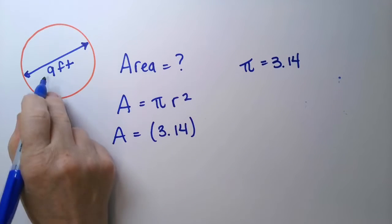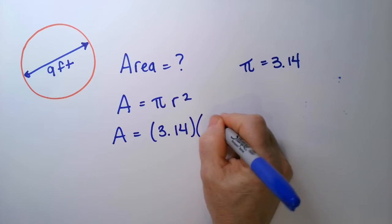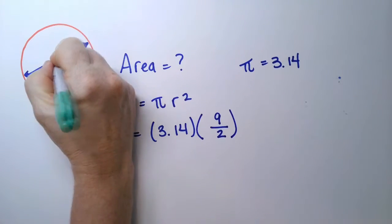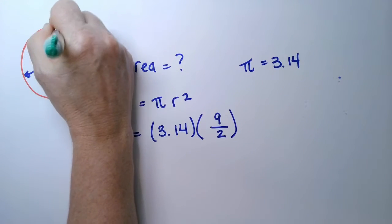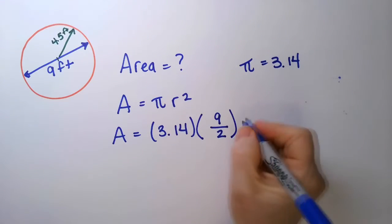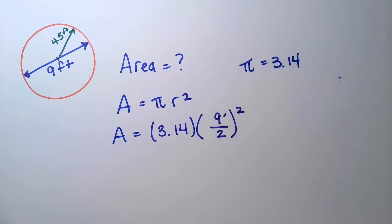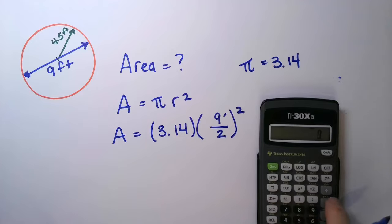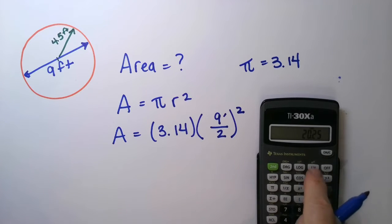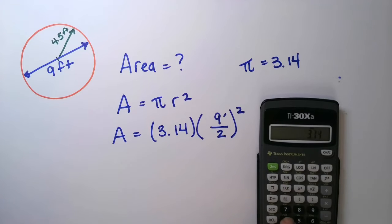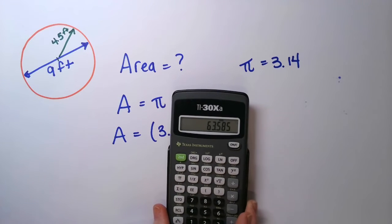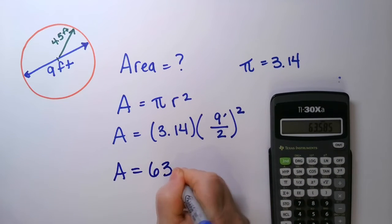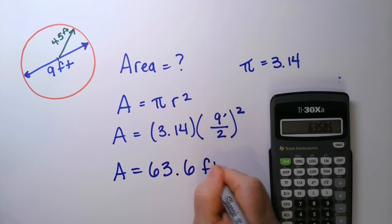But this formula needs radius, and all I have is diameter. So what I'm going to do is divide 9 by 2 to give me my radius — 9 over 2 is 4.5 feet. Then I'm going to remember to square that. On the calculator I put in 9 divided by 2, hit the squared button, then multiply by 3.14. I get 63.6, so my area is 63.6 feet squared.